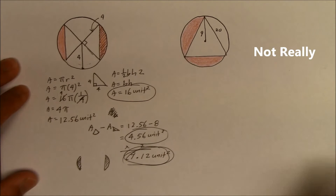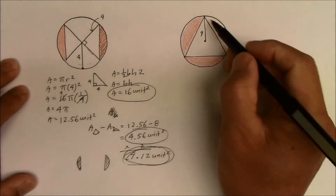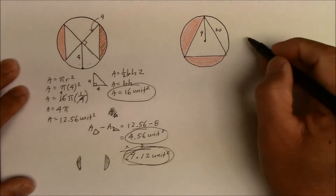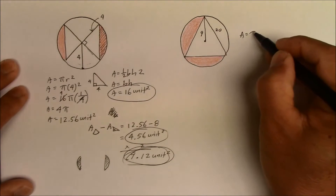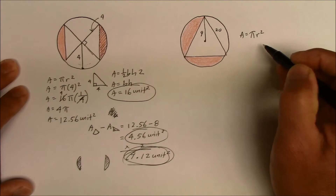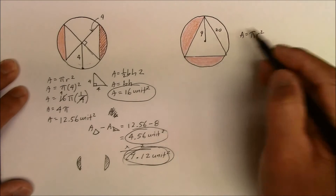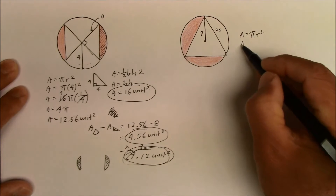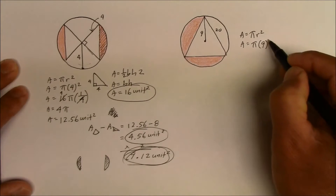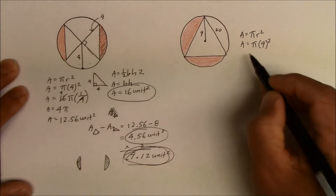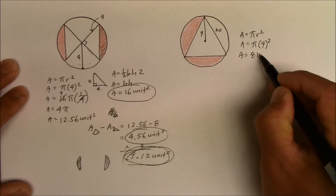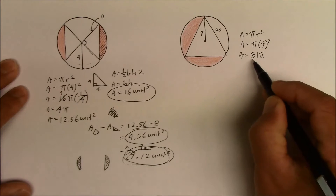In this case, again we have a circle, so you find the area of a circle using pi r squared. We need a radius — what's given to us is 9. So that's pi times 9 squared, which gives area equals 81 pi. That's the area of the circle.